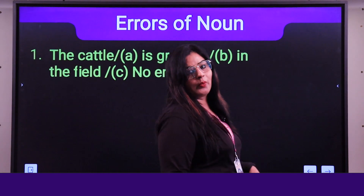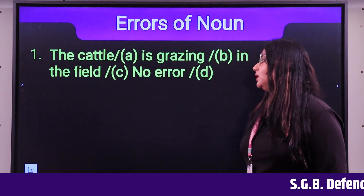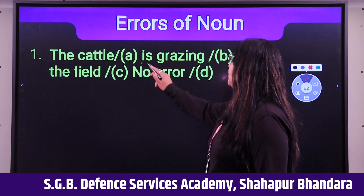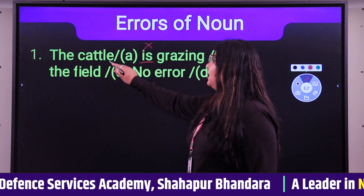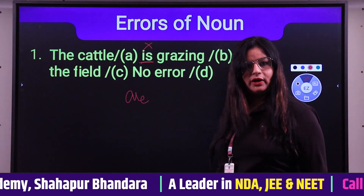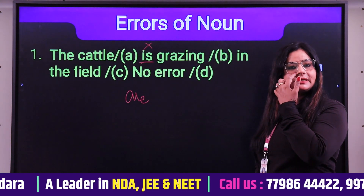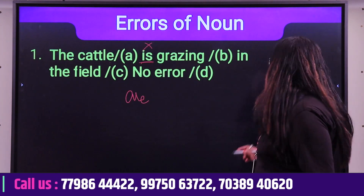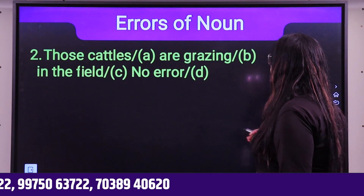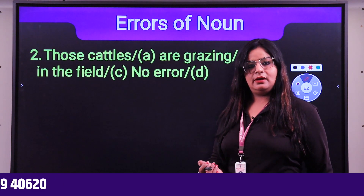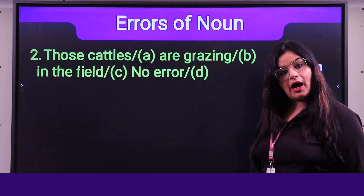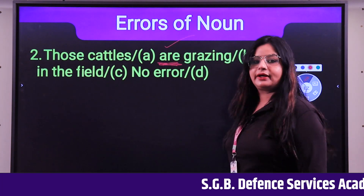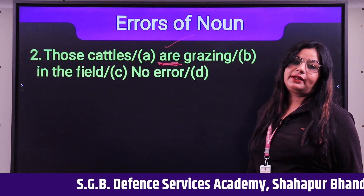An exam-style question: 'The cattle is grazing in the field.' Cattle is plural, so 'is' should be replaced with 'are.' Next, a slightly twisted version: 'The cattle are grazing in the field.' Here 'are' is correct. Students are asked to identify the actual error in this second sentence and comment the answer with their explanation.